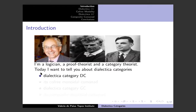Today I want to tell you all about dialectical categories. I want to talk about the first dialectical category DC — D for dialectical, C because any category is called C — which is a parametric construction on a category C. Please feel free to ask questions about the calculations, except about where we're going with this stuff — we can discuss that at the end.